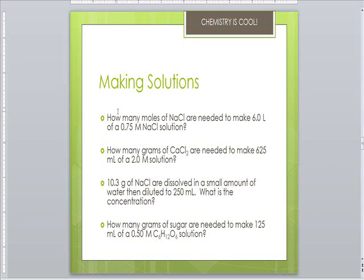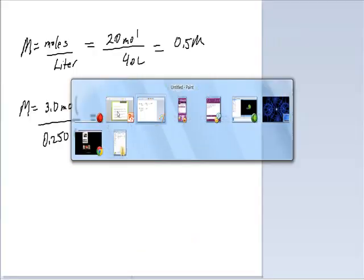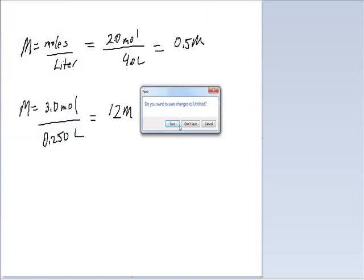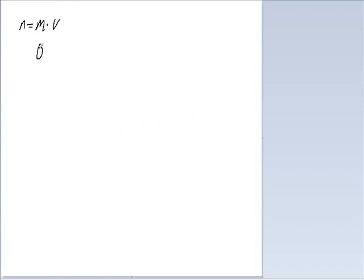The first question: how many moles of sodium chloride are needed to make 6 liters of a 0.75 molar sodium chloride solution? We have to find the number of moles, n. The number of moles equals the molarity times the volume. So we have 0.75 moles per liter times 6 liters. We cancel the liter units and our final answer is 4.5 moles.